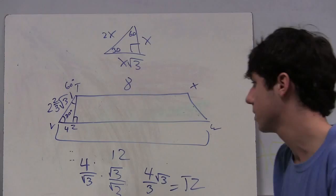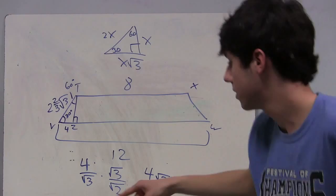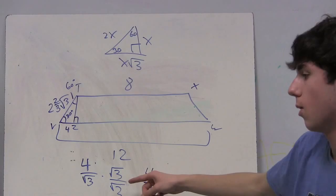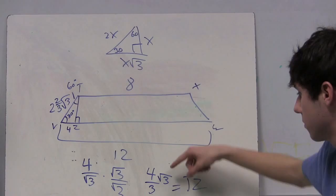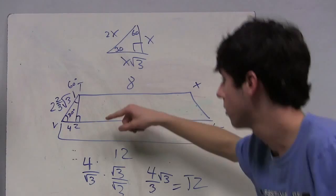Since we know 4 is X times the square root of 3, we need to divide by the square root of 3. We multiply by root 3 over root 3 to rationalize, getting 4 root 3 over 3, and that equals TZ.